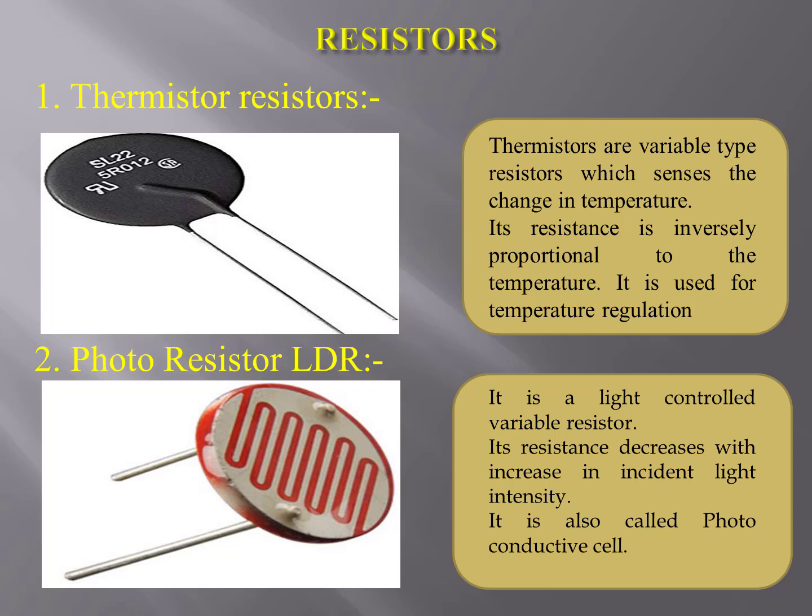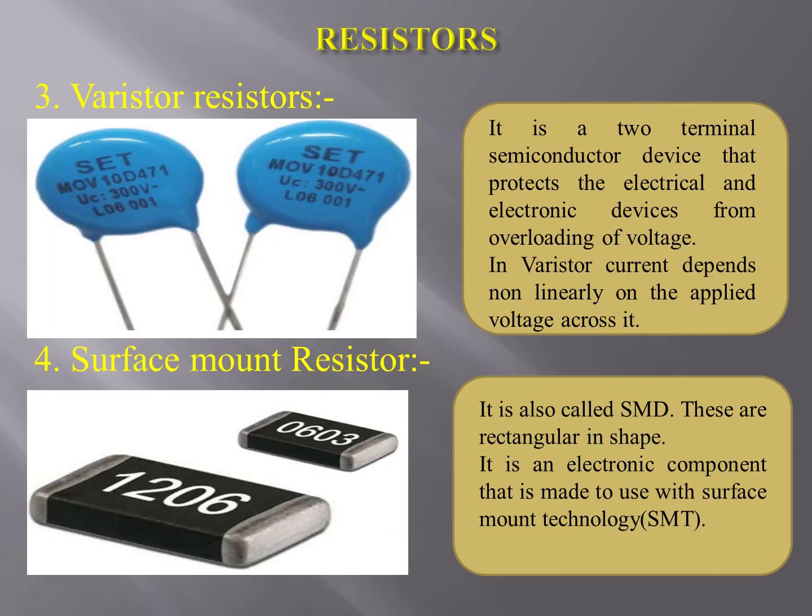Photo resistor: it is a light-controlled variable resistor. Its resistance decreases with increase in incident light intensity — it is also called a photo-conductive cell. Varistor: it is a two-terminal semiconductor device that protects electrical and electronic devices from voltage overloading; current depends non-linearly on the applied voltage. Surface mount resistor (SMD): these are rectangular in shape and are electronic components made to use with surface mount technology (SMT).